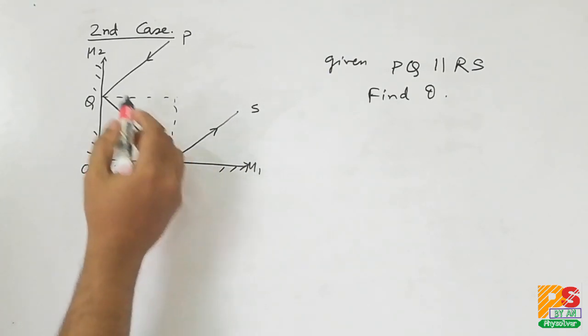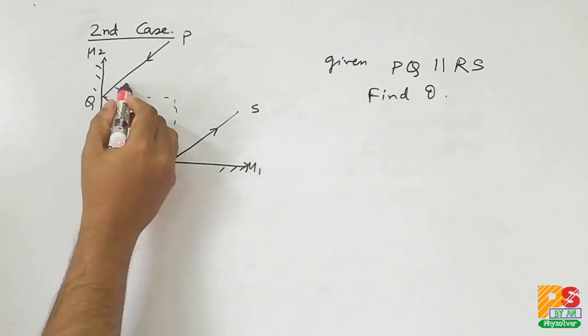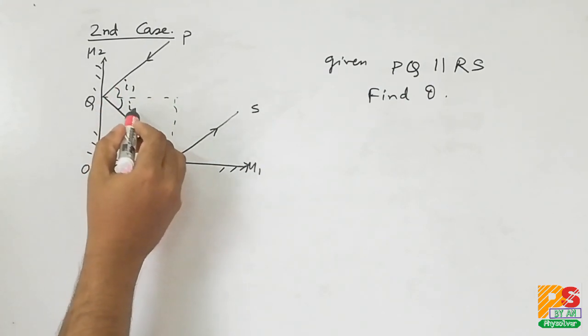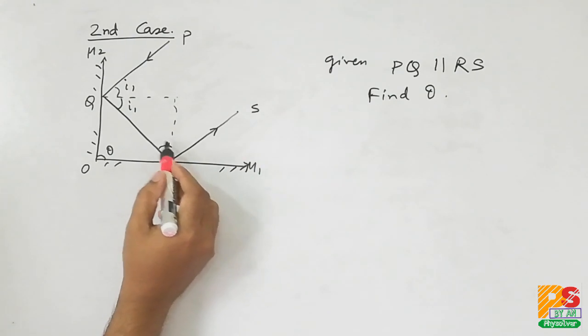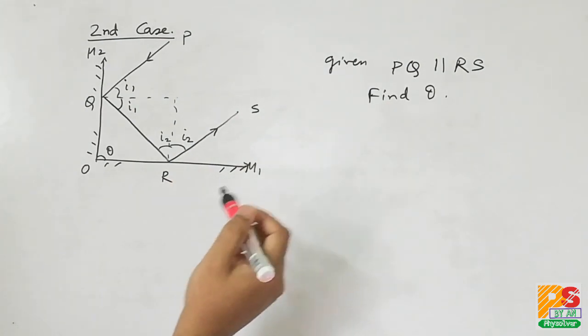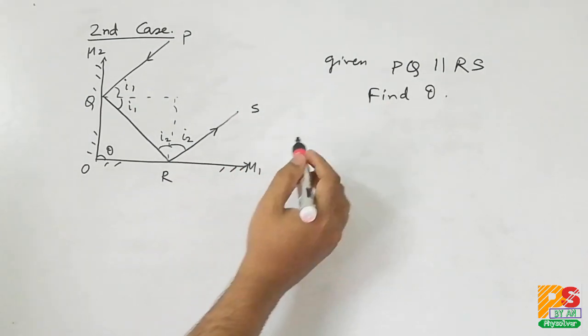Let's draw the normal. Angle of incidence at point Q is I1, so angle of reflection is also I1. And at point R, angle of incidence and angle of reflection are I2.